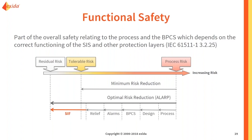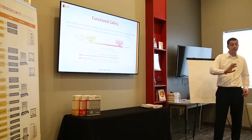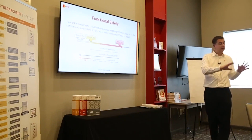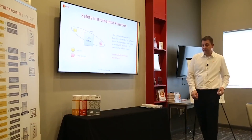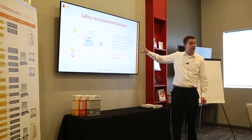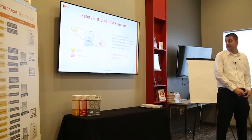As you can see from the graph, if the risk reduction from other layers would be just a little bit larger, we wouldn't need a safety instrumented function at all. So I'm not advocating that we should always use safety instrumented functions, even though that's what we'll focus on. A safety instrumented function needs to detect the hazard and bring the process to a safe state — it is expected to achieve or maintain a safe state with regard to a specific hazardous event.